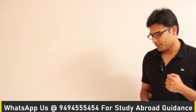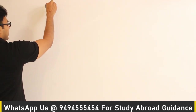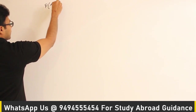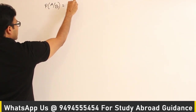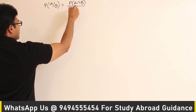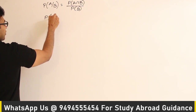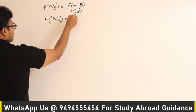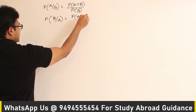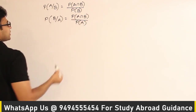Now let's see one of the obligations of conditional probability. We already know that P of A given B is equal to P of A intersection B divided by P of B. Similarly, P of B given A is equal to P of A intersection B divided by P of A.